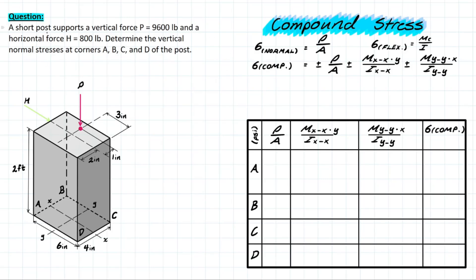The problem goes as follows. We have a short post supporting a vertical load of 9,600 pounds and a horizontal force of 800 pounds and it wants us to determine the normal stresses at corners A, B, C, and D.